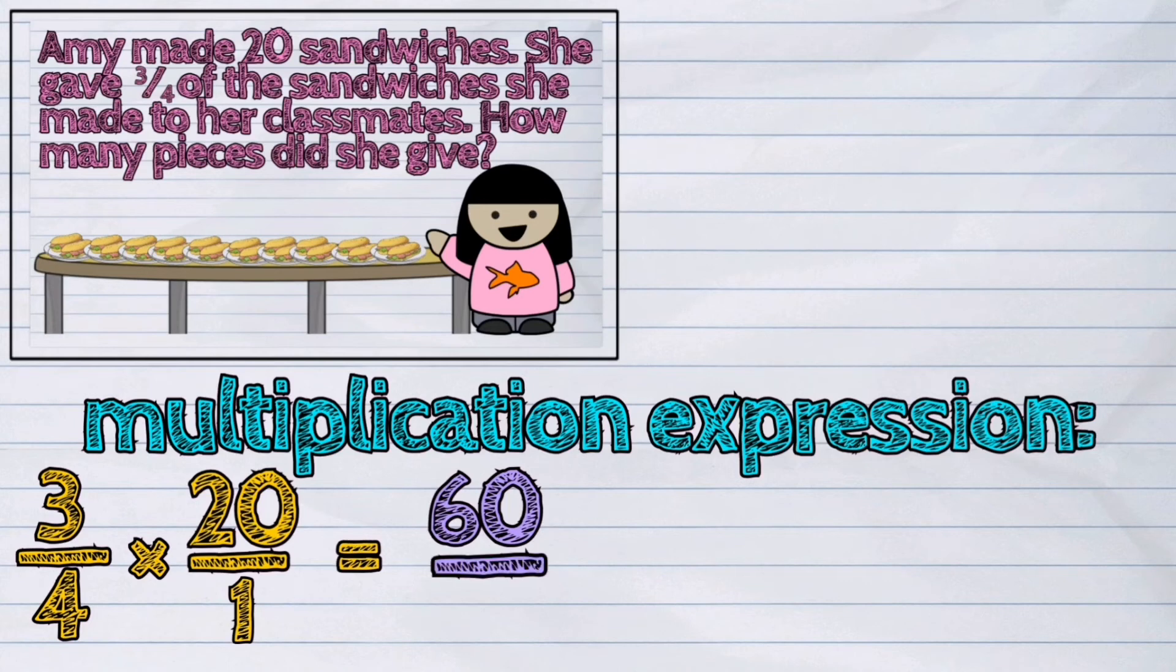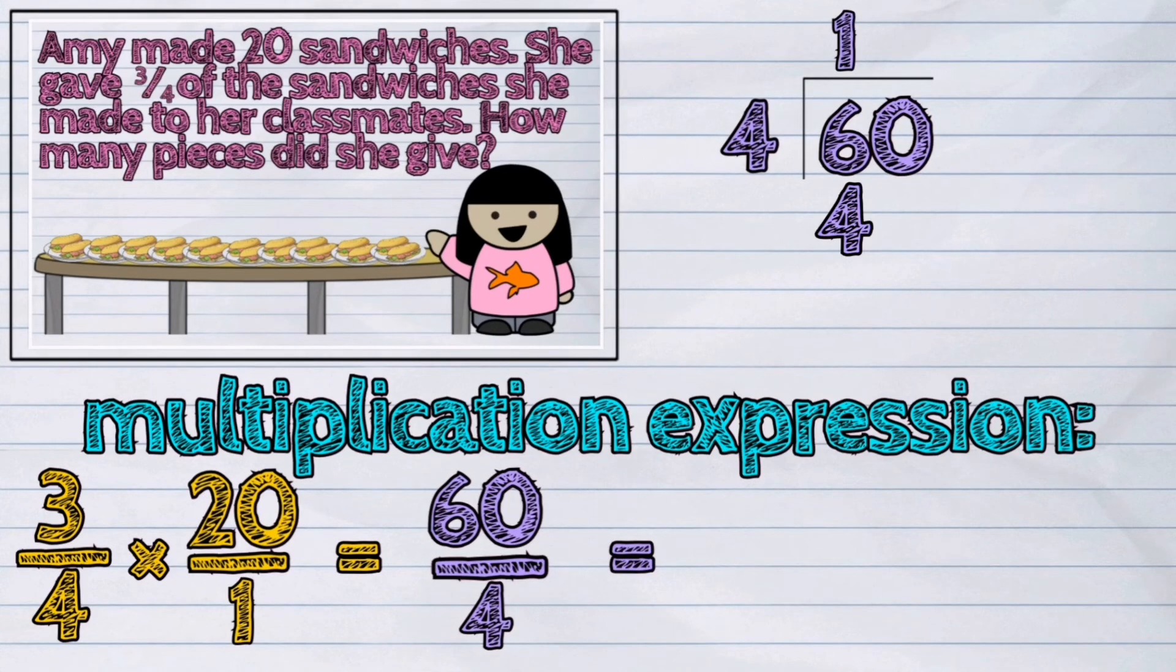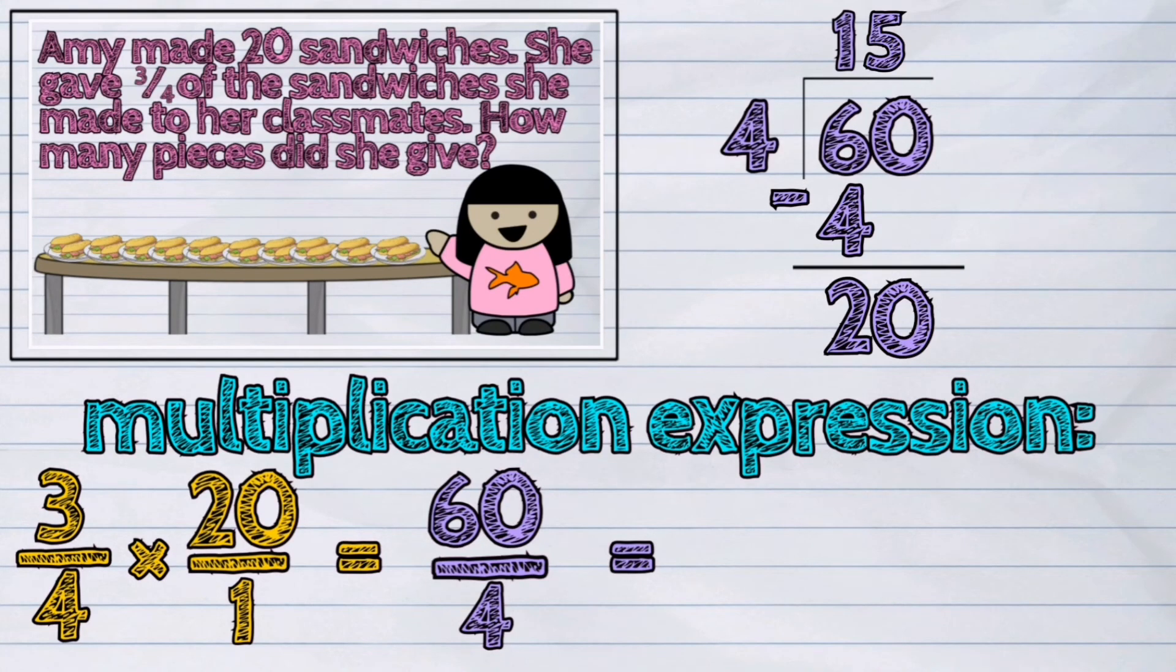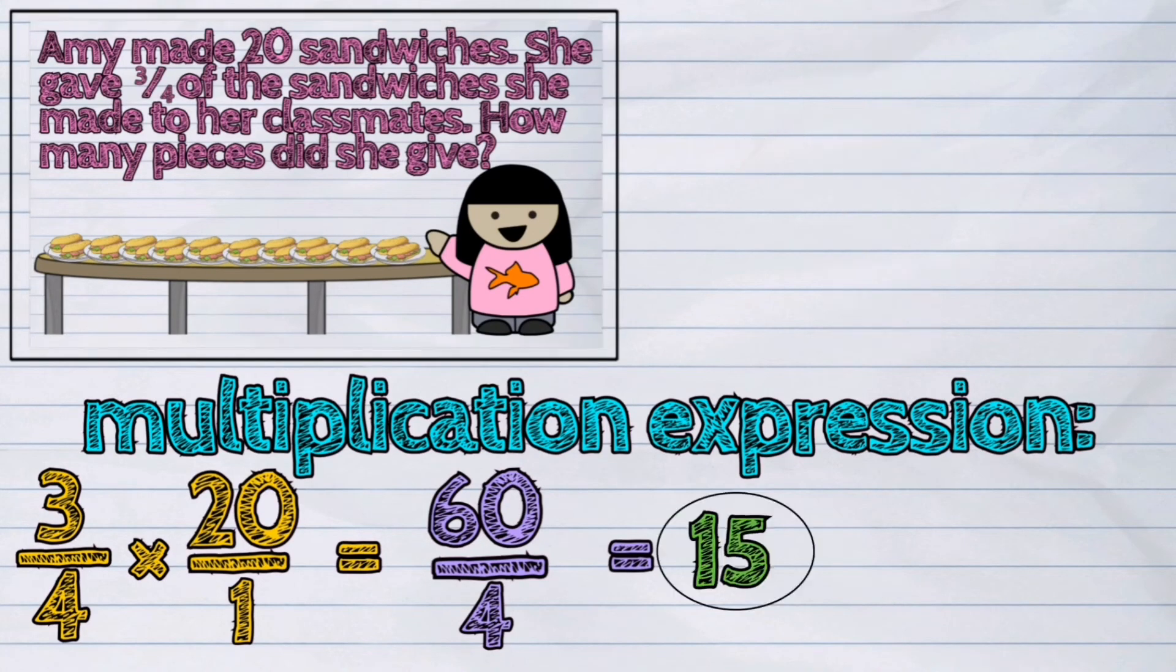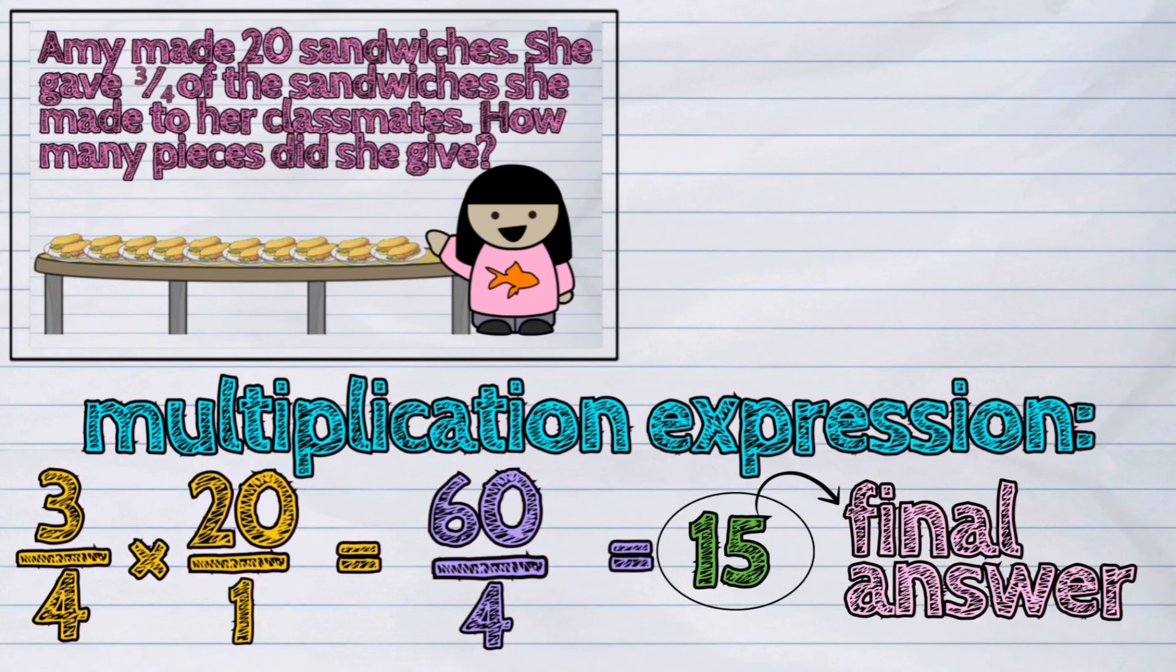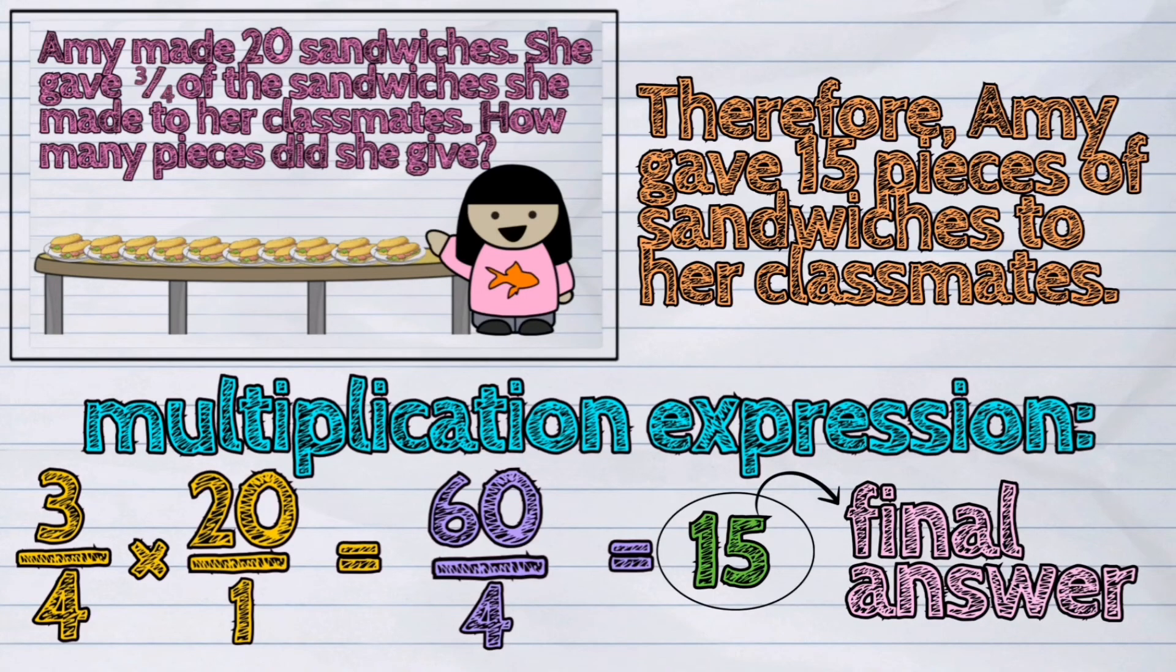Next, divide 60 by 4. The answer is 15. Therefore, Amy gave 15 pieces of sandwiches to her classmates.